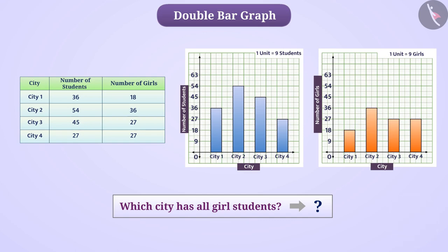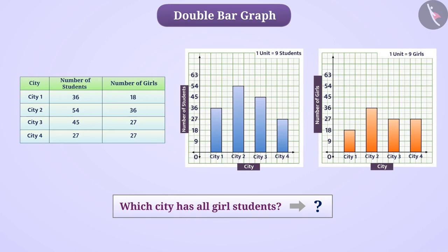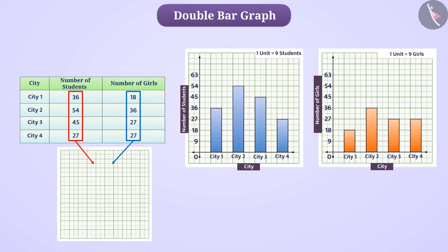We cannot get combined information from different bar graphs. Here the number of students and the number of girls are related to each other. In such a situation, if we represent both types of data together in pictorial form, then it will be more convenient for us to understand the data. This feature provides us with a double bar graph.